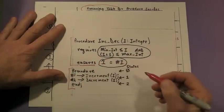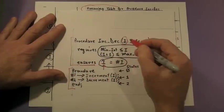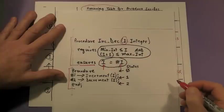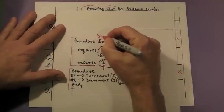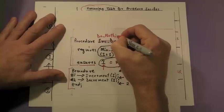The ensures clause states that the outgoing value of parameter i is equal to the incoming value of parameter i. Because of this, we're going to generalize the name of the operation to do nothing.